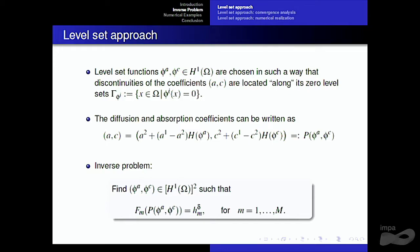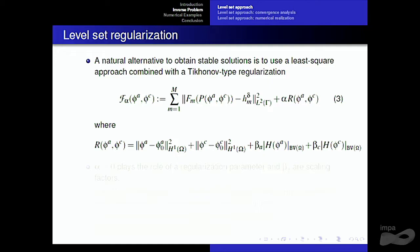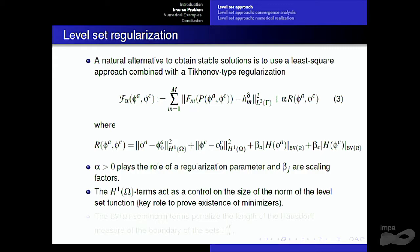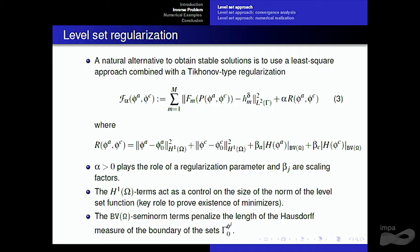The inverse problem can now be rewritten in these terms: we want to find two level set functions such that this equation is valid for all measurements. A natural approach for a stable solution is to use a least-squares formulation combined with Tikhonov regularization. Alpha is the unique regularization parameter, and beta_A and beta_C are scaling factors. The H1 term acts as a control on the size of the level set function and plays a key role in proving the existence of minimizers. The term with the TV semi-norm penalizes the length of the boundary of the level sets.